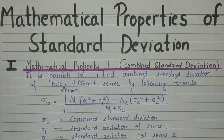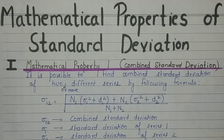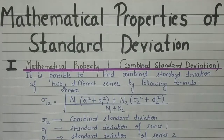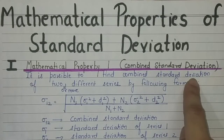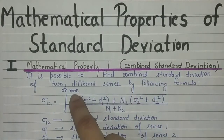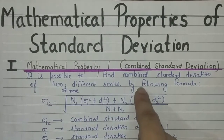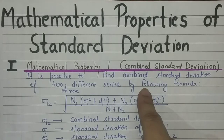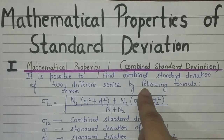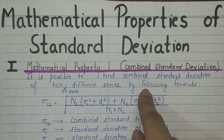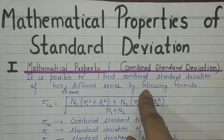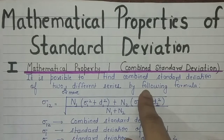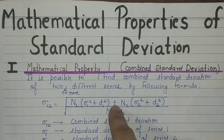The very first property — Property 1 of standard deviation — is that it is possible to calculate the combined standard deviation of 2 or more different series. Just as we calculate combined mean, similarly we can calculate combined standard deviation. And this is the formula.